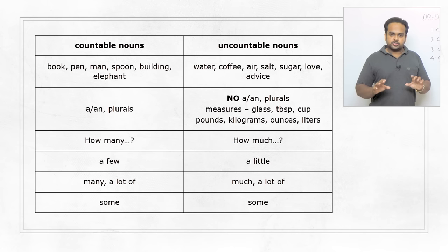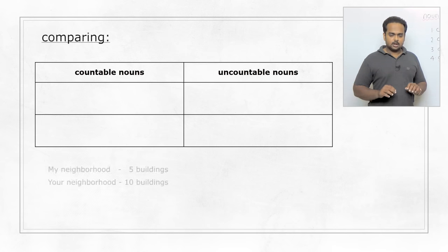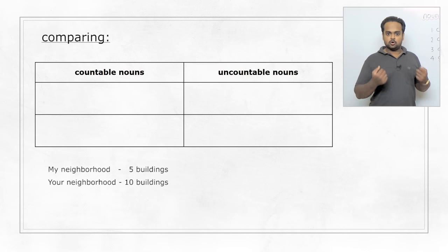Now I want to tell you about an area where a lot of students make mistakes, so pay close attention. And this is when we want to make comparisons. We're going to take a couple of examples. Let's say that in my neighbourhood, that is, in the place where I live, there are five buildings. In your neighbourhood, there are ten buildings. So we can say that there are more buildings in your neighbourhood. Just keep that in mind.